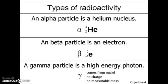The final decay that we're going to look at is gamma decay. Gamma decay produces a gamma particle which is a high-energy photon. A high-energy photon is basically just an electromagnetic wave. Now the gamma particle is denoted by this symbol here. It comes from the nucleus. It has no charge and no measurable mass but it does have energy.